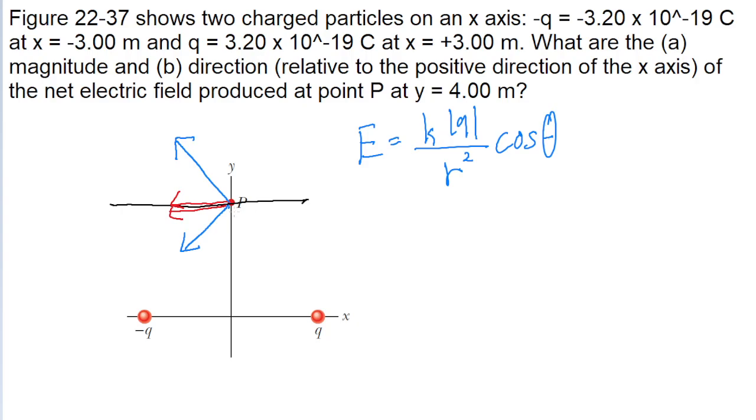So in that formula, R is represented by this distance from P to Q, and this distance from P to negative Q. Because of the symmetry of this situation, both of those distances are going to be the same value R.